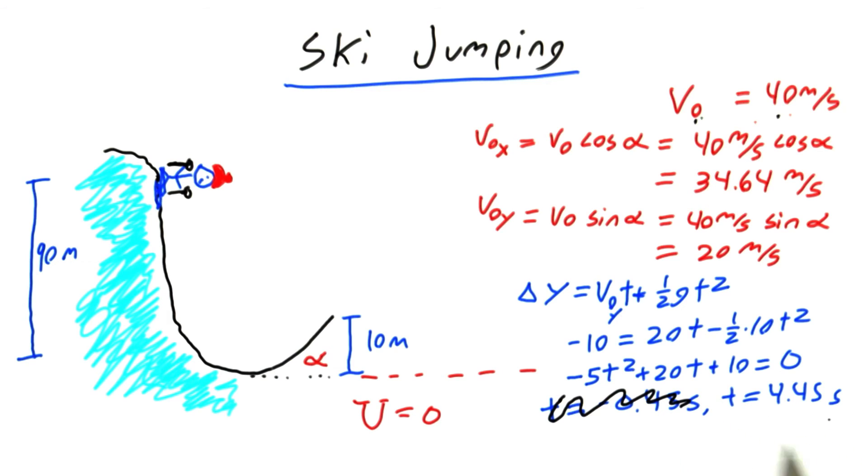Instead, we'll focus on this positive solution: time equals 4.45 seconds. That sounds reasonable. It might take about 4.5 seconds for the skier to go in the air and land back on the ground.